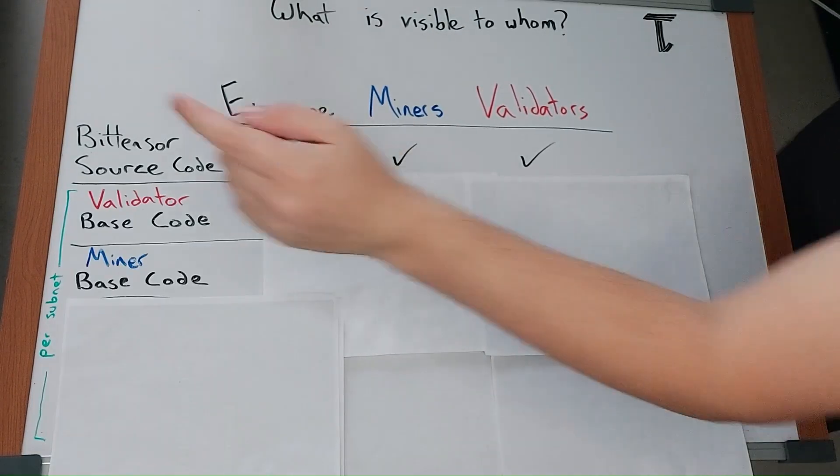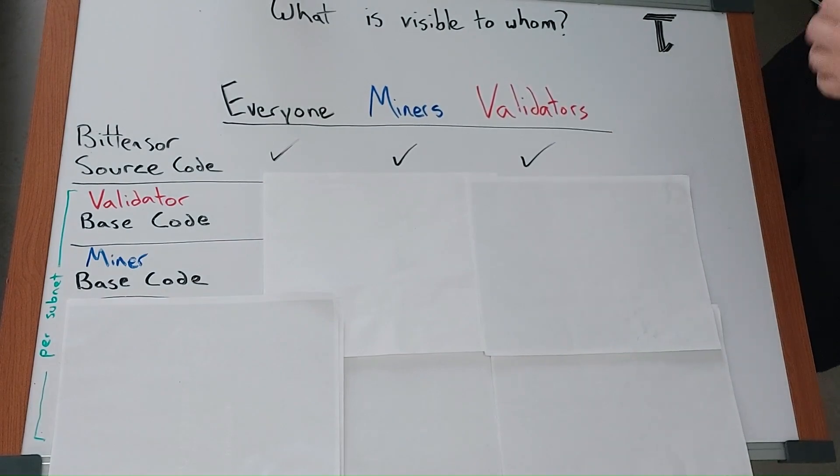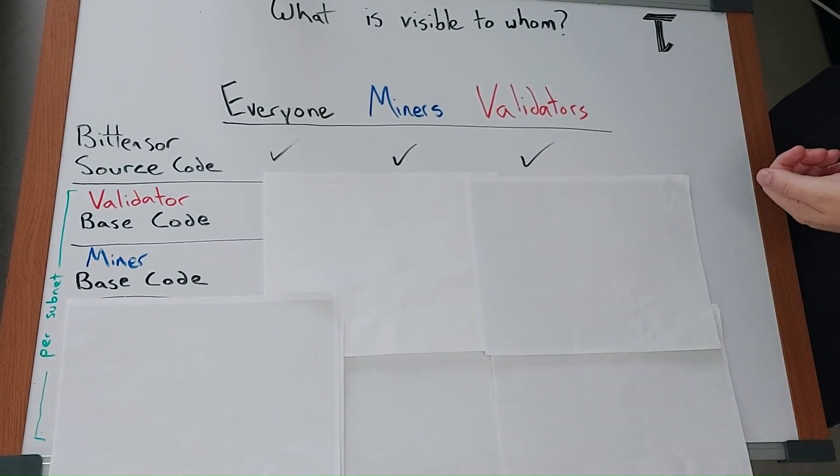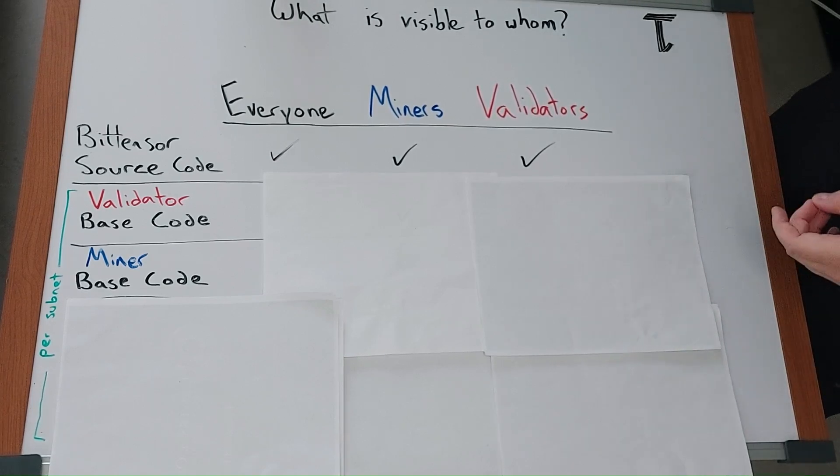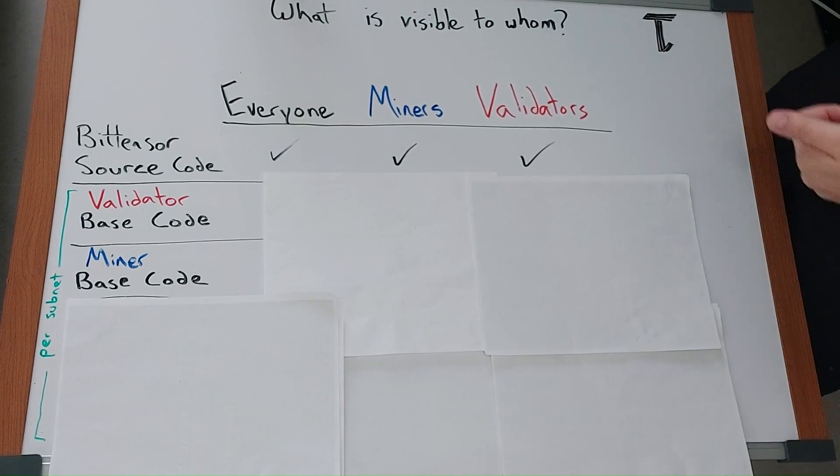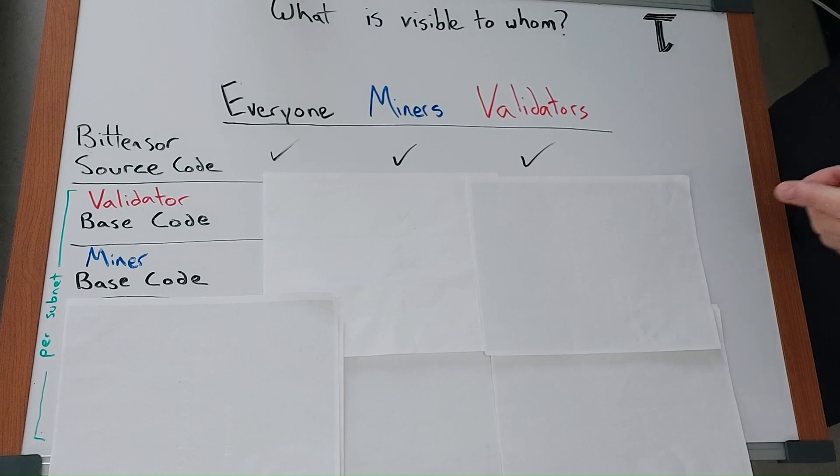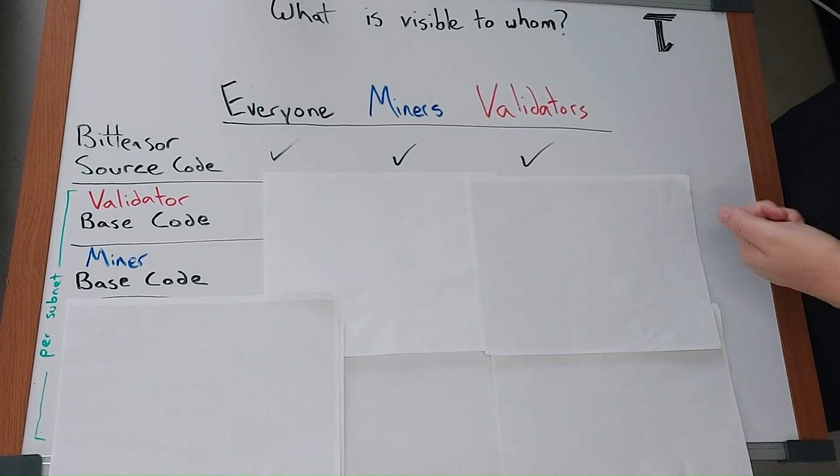Each BitTensor subnet may have their own open source license. Licenses don't really make sense to me with respect to BitTensor since it's decentralized and hard to tell who, if anyone, has jurisdiction over it. Subnets are encouraged to use the MIT license and personally I'd have questions for those who don't want their code to be completely free for anyone to use.